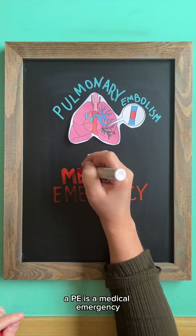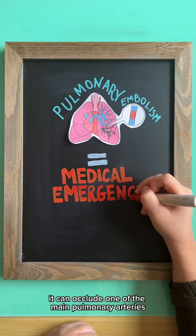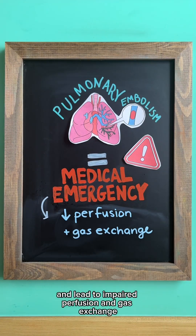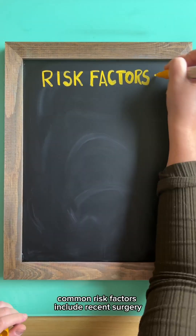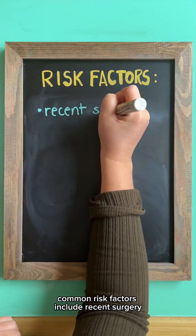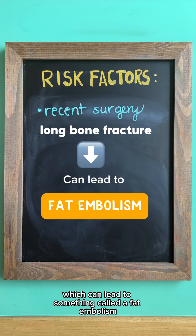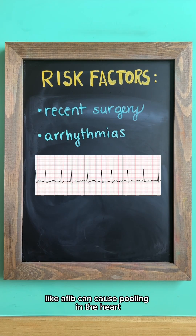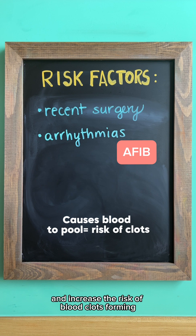A PE is a medical emergency. It can occlude one of the main pulmonary arteries and lead to impaired perfusion and gas exchange. Common risk factors include recent surgery, especially due to a long bone fracture, which can lead to something called a fat embolism. Arrhythmias like a-fib can cause pooling in the heart and increase the risk of blood clots forming.